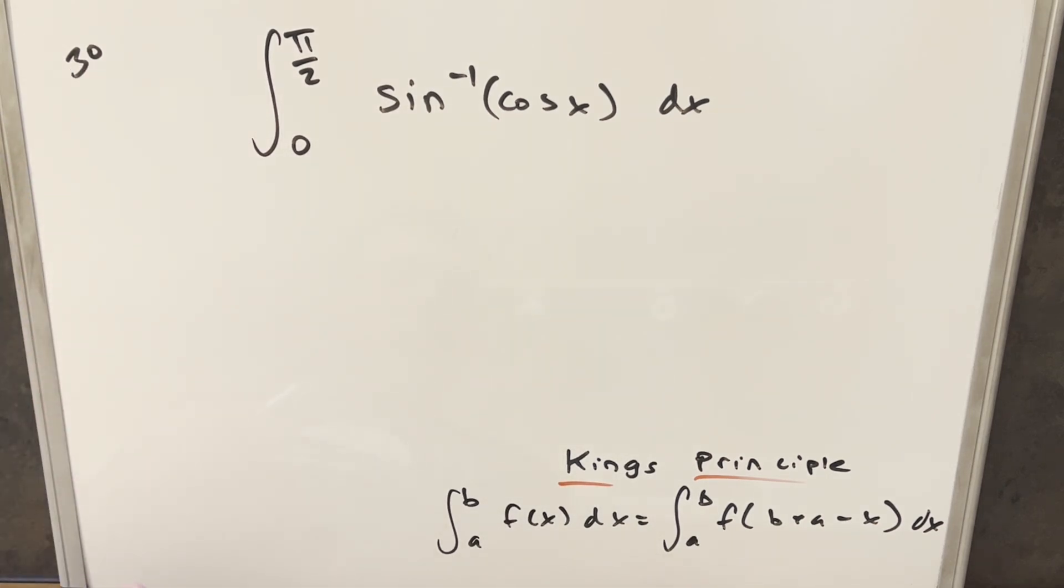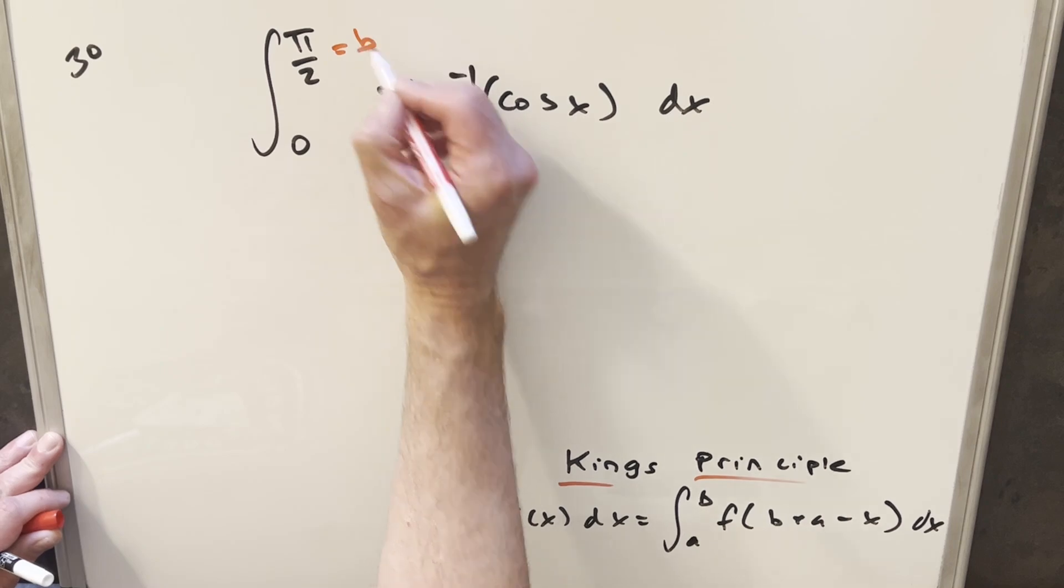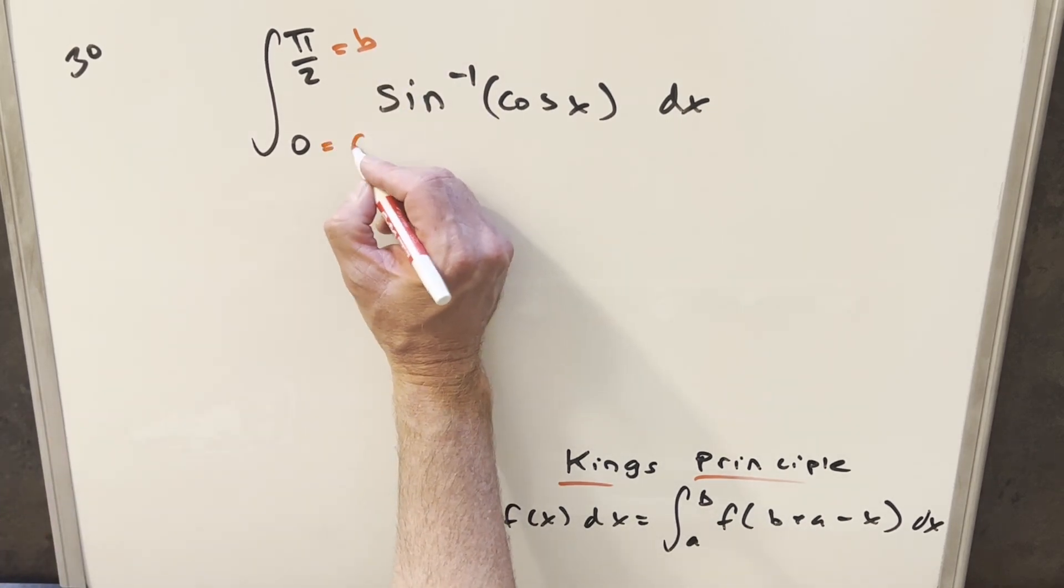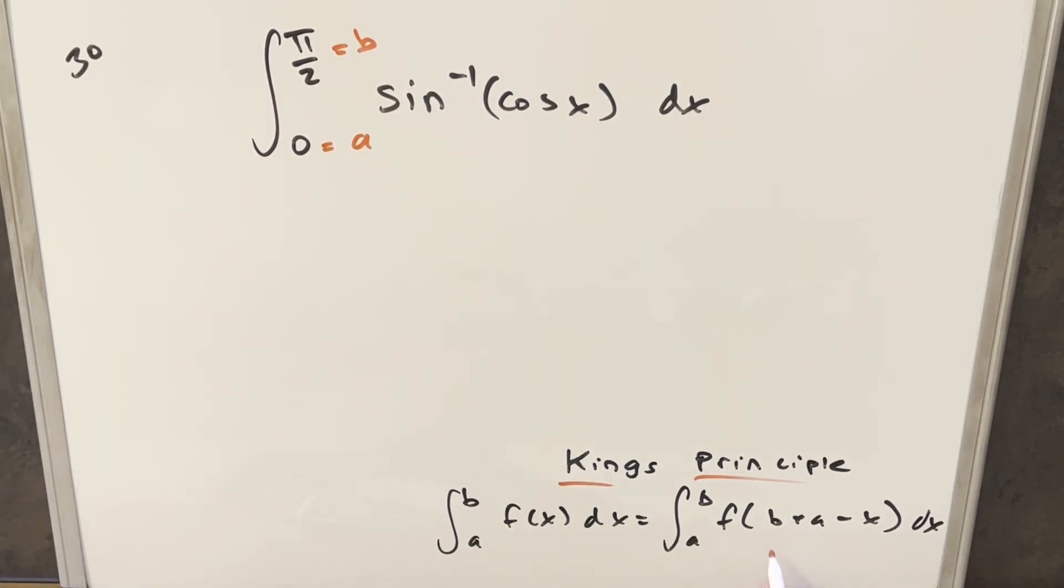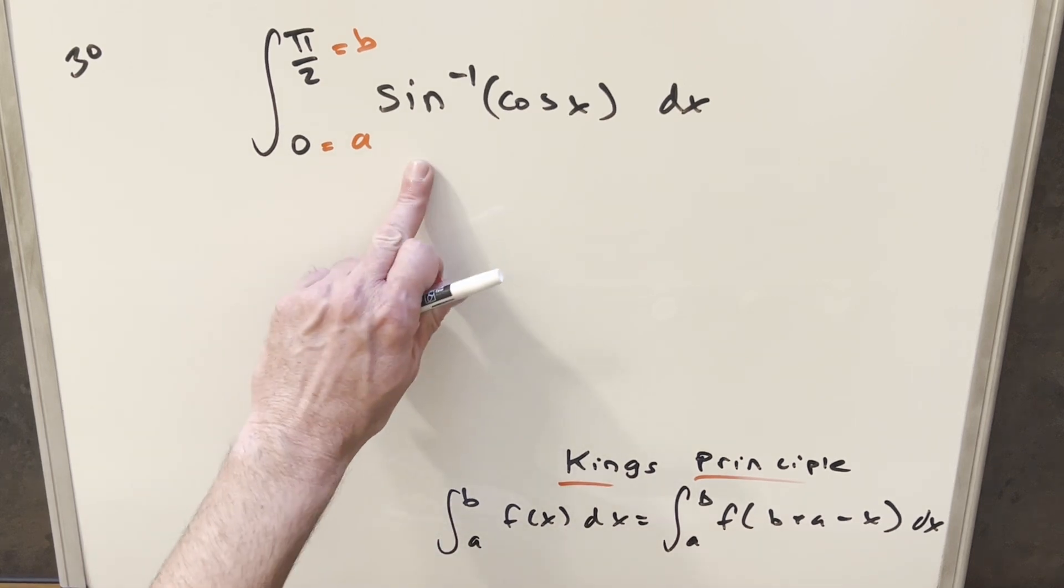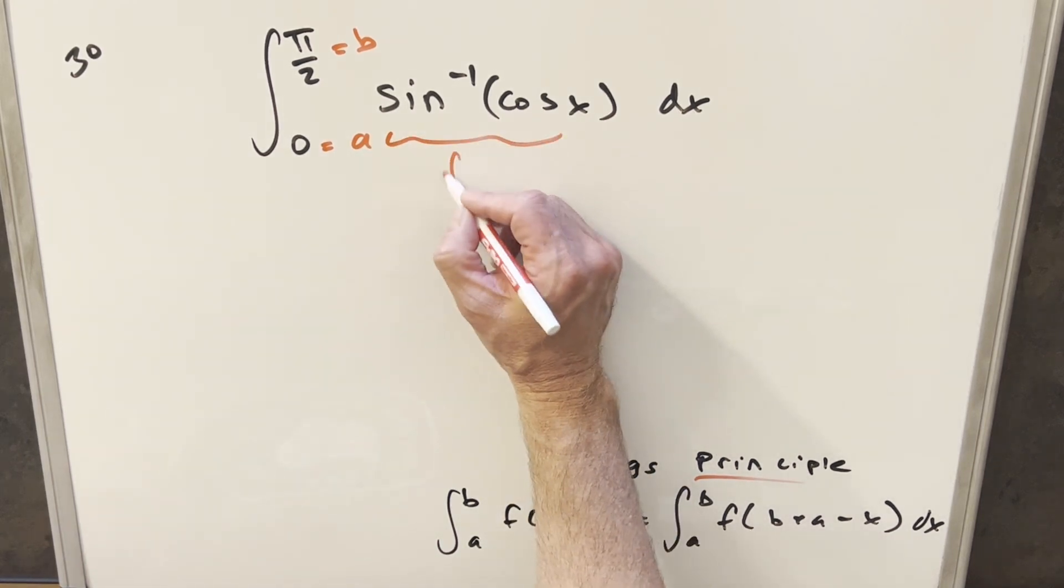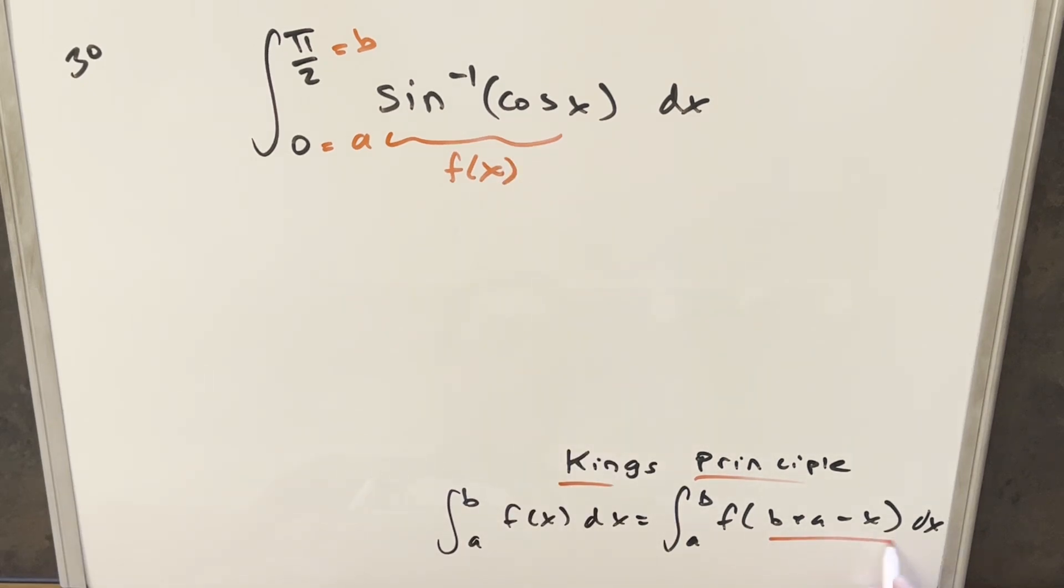So then, in this case, using this, our b value is going to be just pi over 2. Our lower bound, our a value, is going to be 0. And then we're basically making a substitution, keeping the bounds the same and evaluating our function, this being our f of x, evaluating it with this.